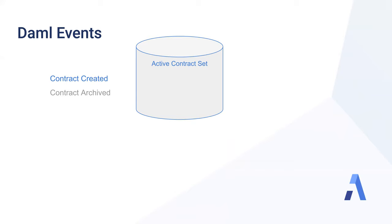To recap: DAML creates an event sourced integration across organizational boundaries or across multiple parties. We interact with a DAML ledger using three time horizons. Commands are a request to change the state in the future. The active contract set is the current state of the ledger — that's usually what I would want to query. And events are the audit log of all of the changes that happened until now.